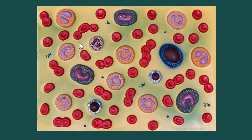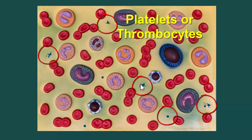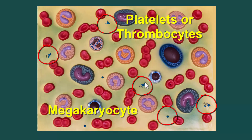Then we have these little fragments — these are called platelets, or thrombocytes. These are actually fragments of a cell called a megakaryocyte. That megakaryocyte remains in the bone marrow, but as it fragments it leaves the bone marrow, enters your circulation, and helps with blood clotting.